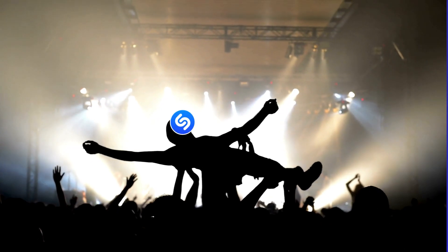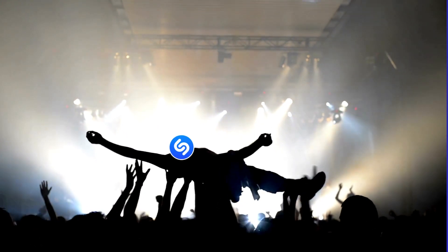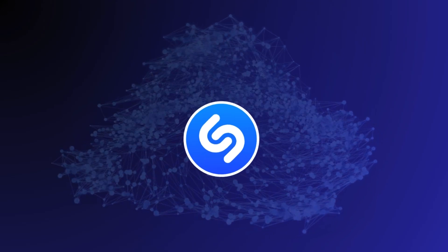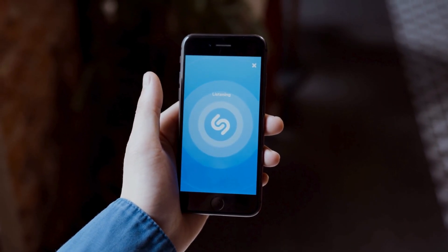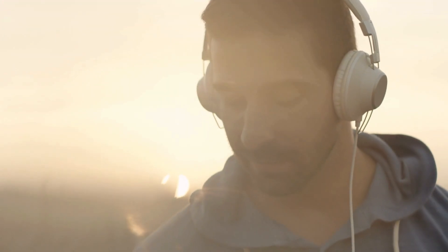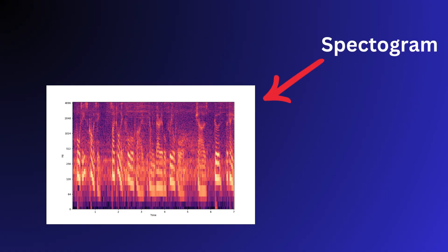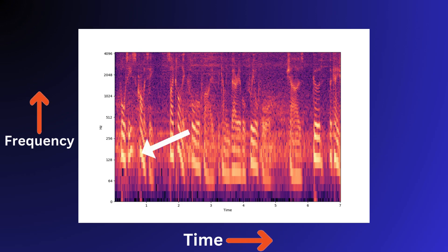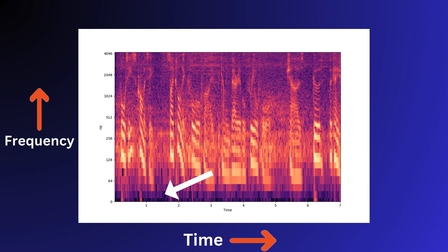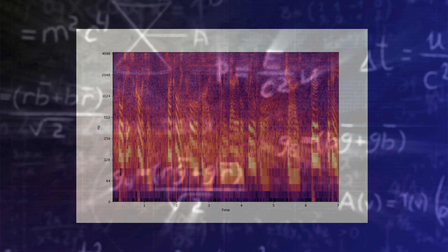This gave Shazam more fame and popularity. The way it works is quite simple — it starts when you tap that blue button. Shazam uses your microphone to listen to the sound and record the data on a graph called a spectrogram. A spectrogram is a type of graph that measures the time and frequency of audio, with the brighter spots being louder sounds and the darker spots being quieter sounds.